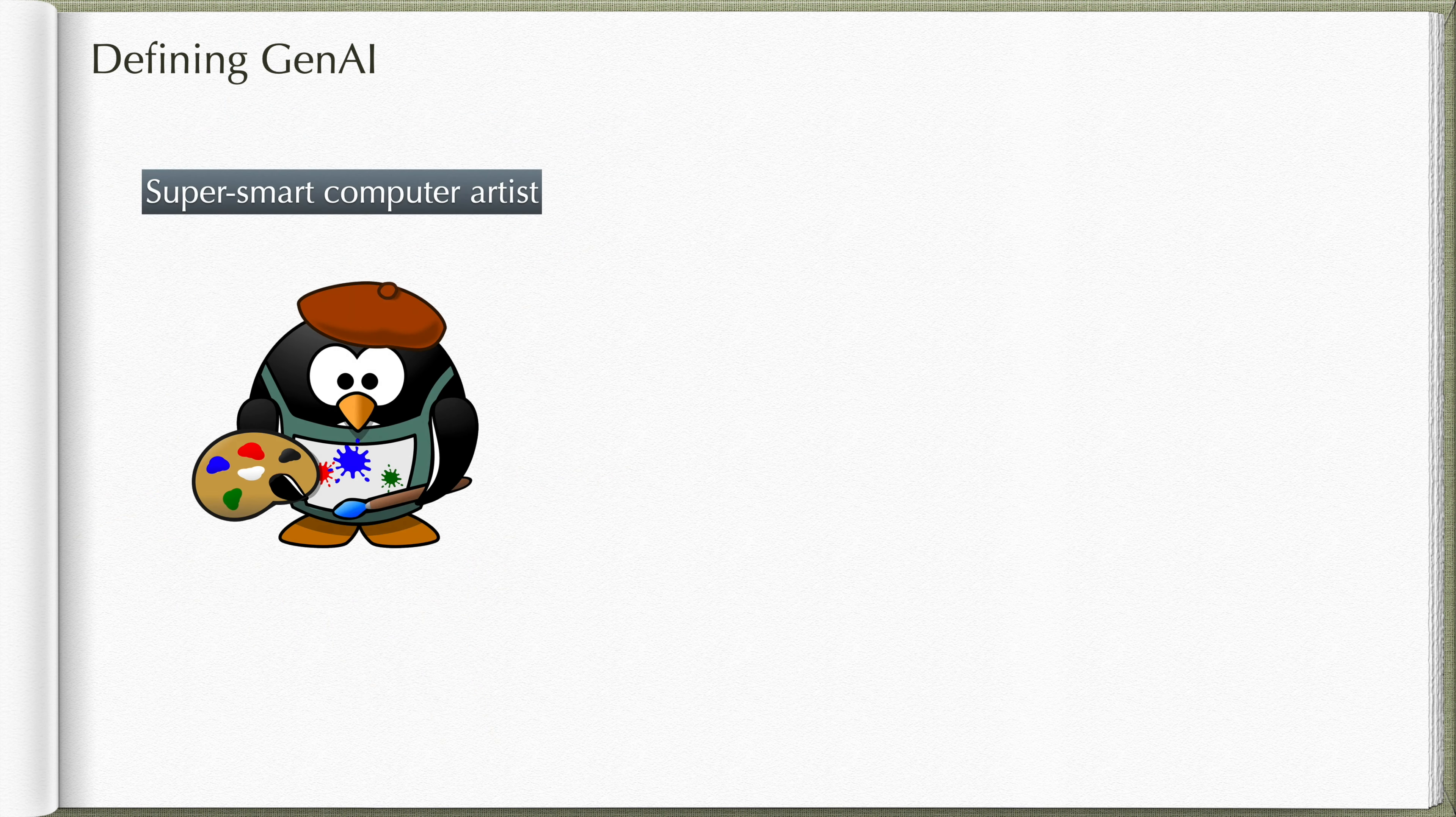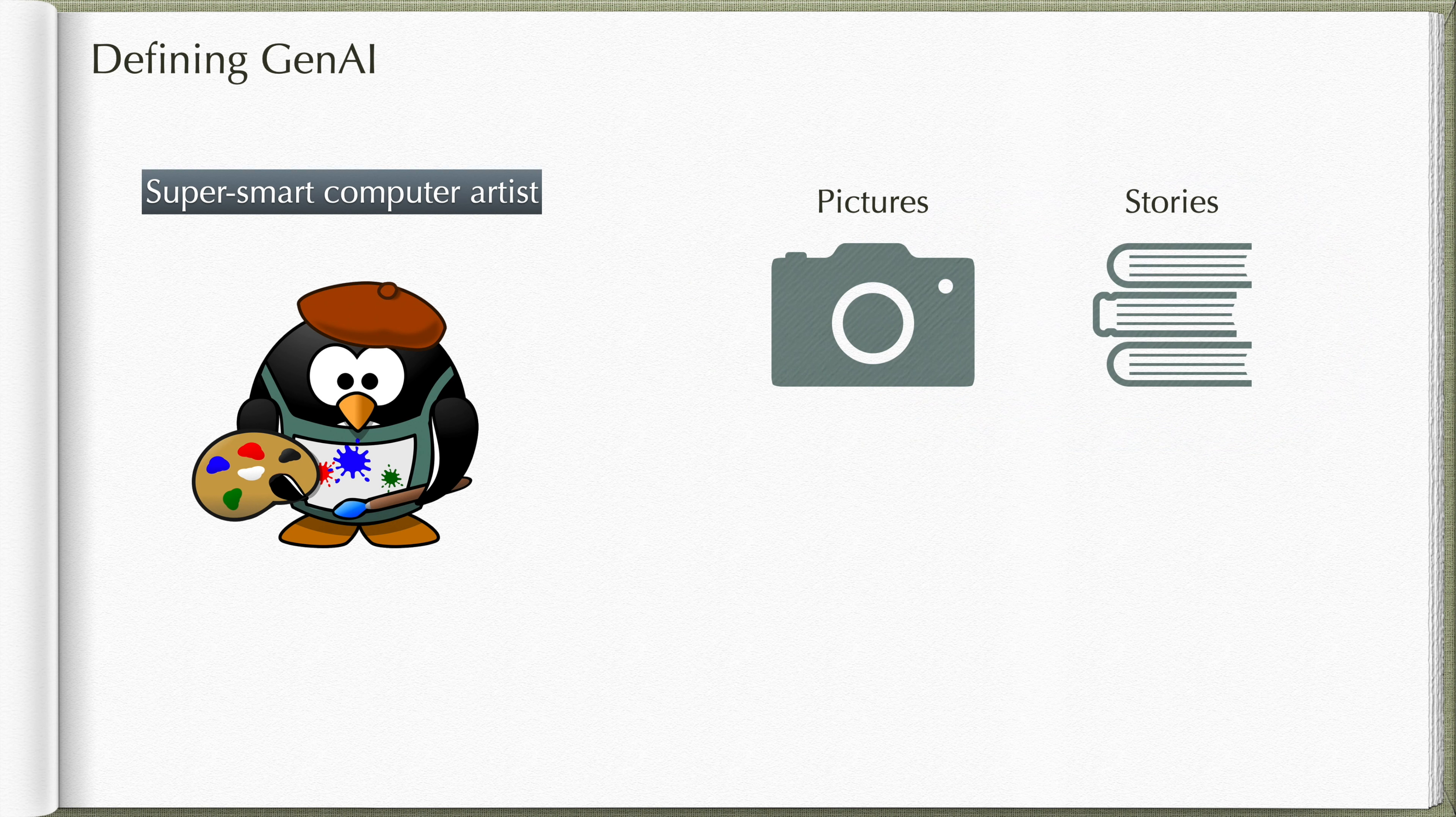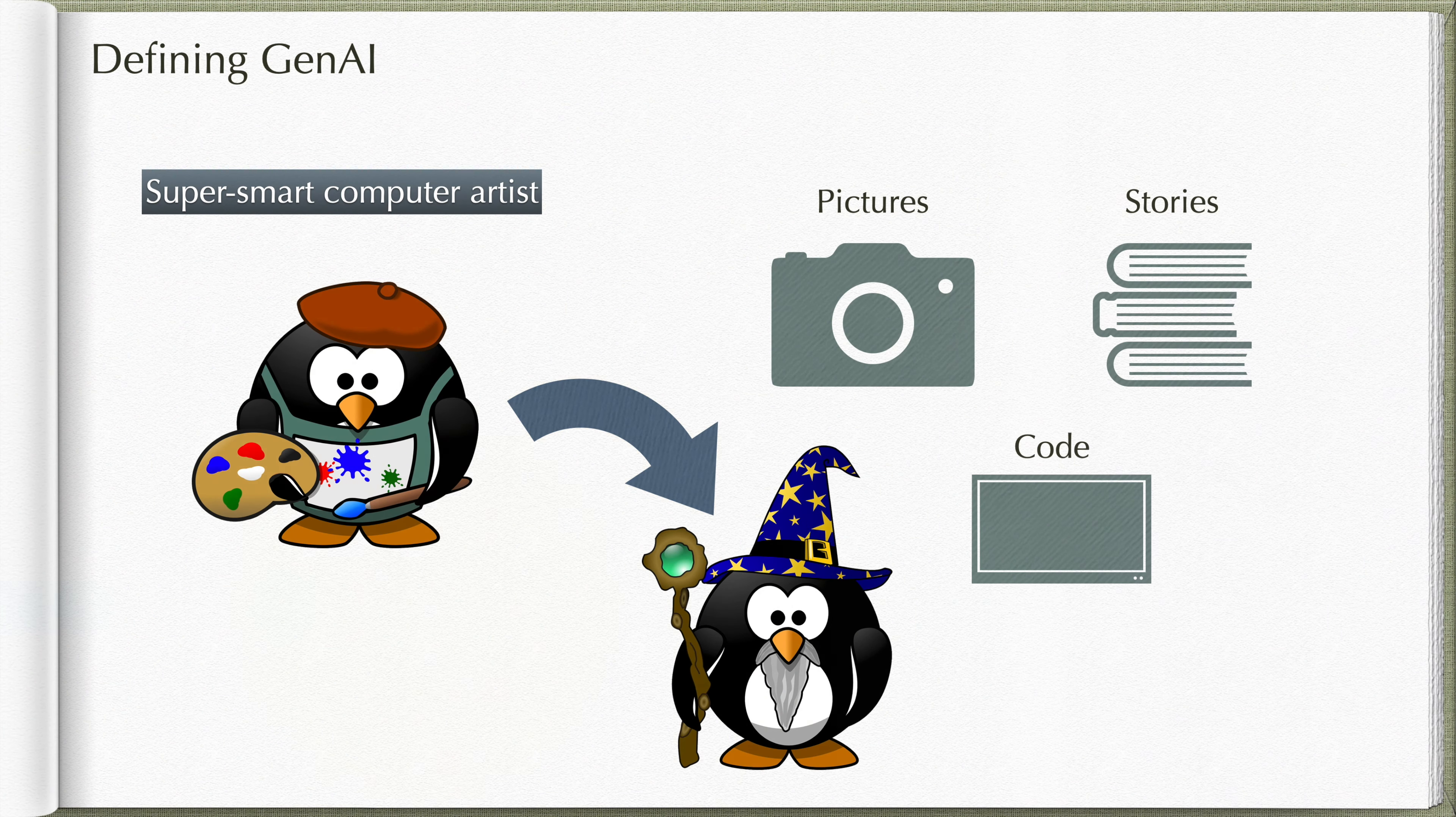Generative AI is like a super smart computer artist. It can create all sorts of things like pictures, stories, or even complex pieces of code just by learning from examples. It's like magic, but it's really just a computer being super creative.